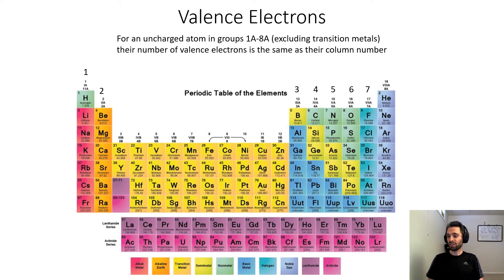Group 7, these all have seven valence electrons. So for example, let's go with bromine. Bromine has seven valence electrons and 35 minus seven, that would be 28 core electrons.